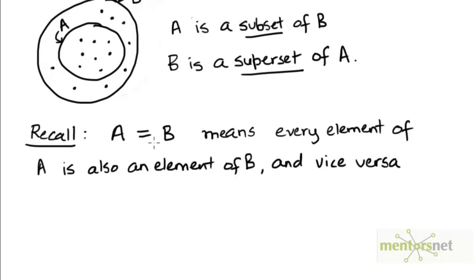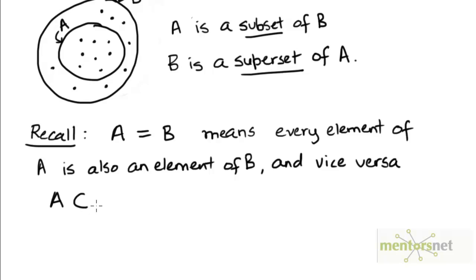Let's recall the definition of two sets A and B being equal. We said that a set A is equal to another set B if every element of A is also an element of B and vice versa — that is, every element of B is also an element of A. Now, to say that every element of A is also an element of B means to say that A is a subset of B.